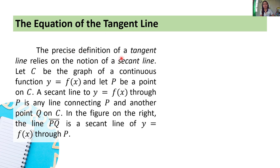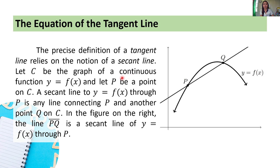The precise definition of a tangent line relies on the notion of a secant line. Let C be the graph of a continuous function y = f(x), and let P be a point on C. A secant line to y = f(x) through P is any line connecting P and another point Q on C. In the figure on the right, the line PQ is a secant line of y = f(x) through P.